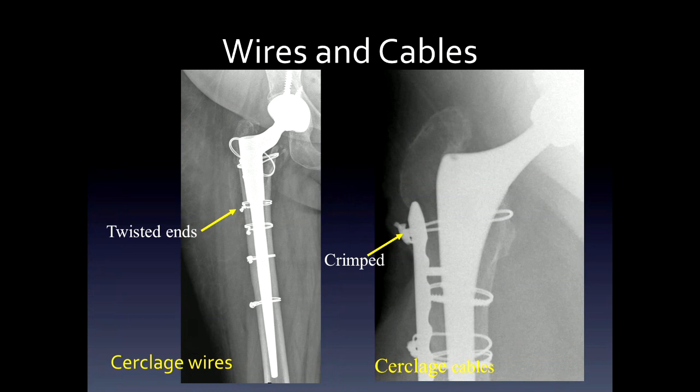Wires are also used to go around bone, particularly in the femur, and these are called cerclage wires. Cerclage wires, shown on the left, have twisted ends. More recently, they've been using cables — cerclage cables — and you can identify them because the ends are crimped together, which looks different than the twists.